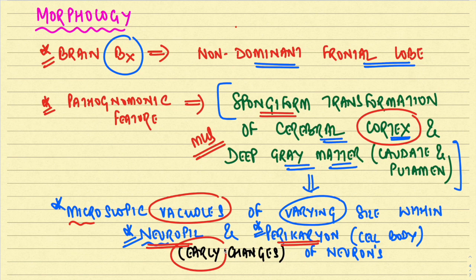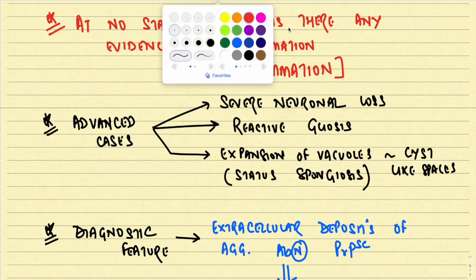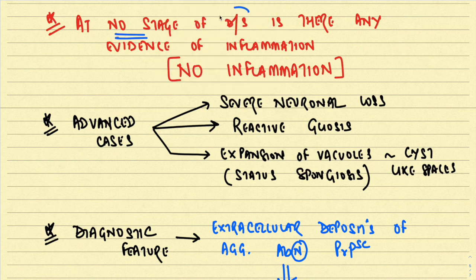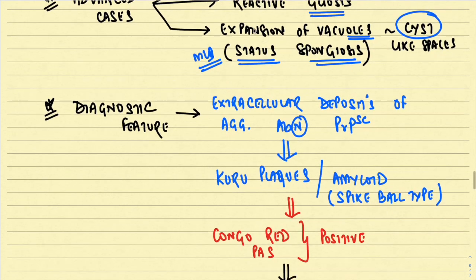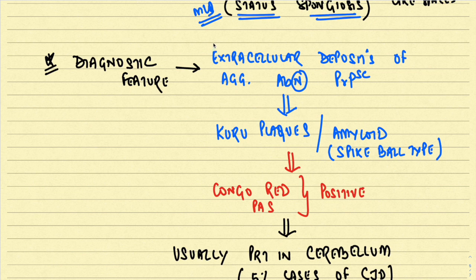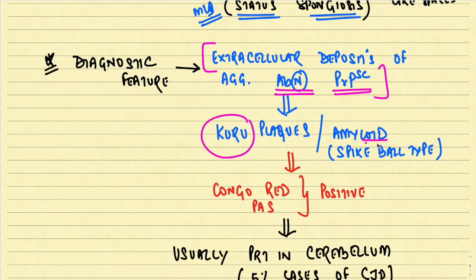These spongiform changes are early changes of prion's disease. One very important characteristic feature is that at no stage is there any kind of inflammation associated with prion's disease. In advanced cases, there will be severe neuronal loss, reactive gliosis, expansion of vacuoles, and these vacuoles might become cyst-like — this condition is called status spongiosis. The diagnostic feature is extracellular deposition of aggregated abnormal PrPSc protein, called kuru plaques, also called spike-ball type amyloid, which are positive on Congo red and PAS staining.